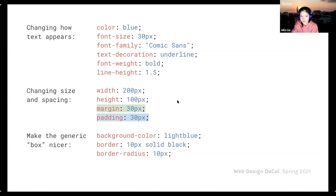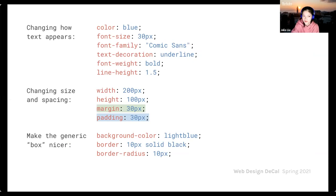Some common CSS properties include: text properties like color, font-size, font-family, and text-decoration applied to paragraph or heading tags. Size and spacing properties such as width, height, margin, and padding are typically applied to divs or block elements. There are also extra styles like background-color, border, and border-radius. The box model — which we'll cover more in the design lecture — shows four levels: margin on the outside, then border, then padding, then the actual content at the center.